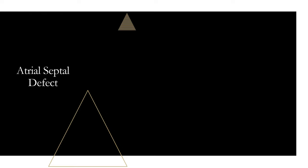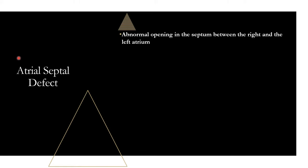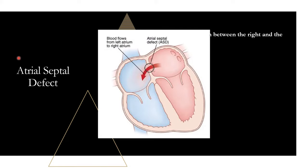Let's get into each condition. Atrial septal defect, just like the name implies, is an abnormal opening in the septum between the right and left atrium. Atrial septal defect does not start with a T, so it is a non-cyanotic condition — though Eisenmenger syndrome can develop. It's just an abnormal opening between the atria, and blood typically flows from the left to the right side of the heart.